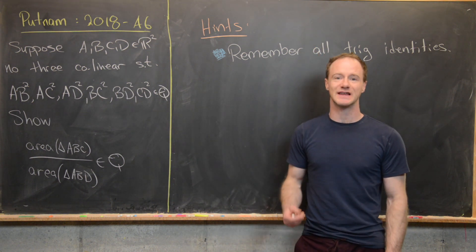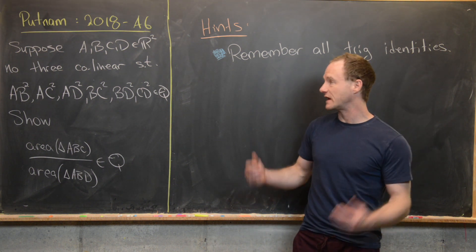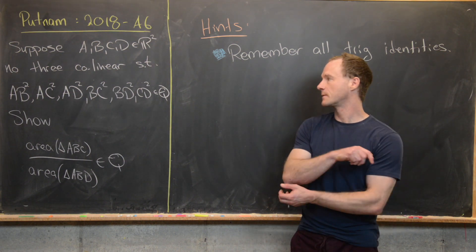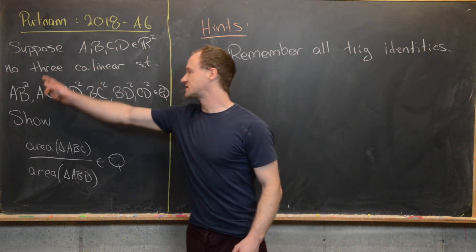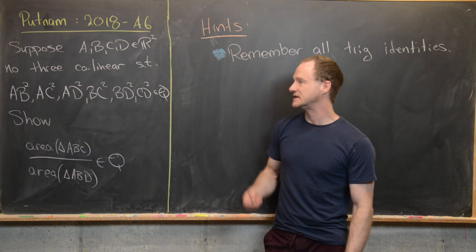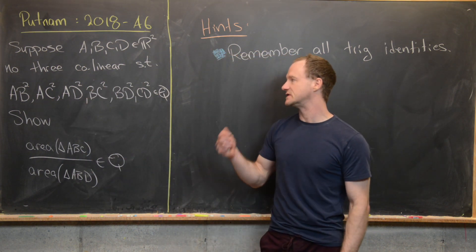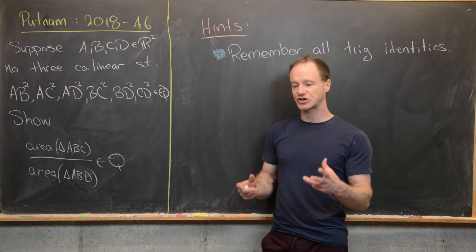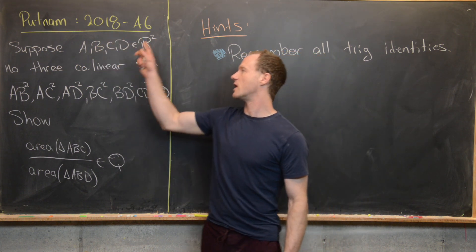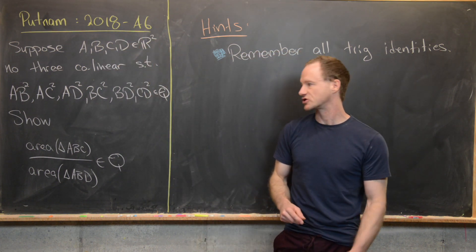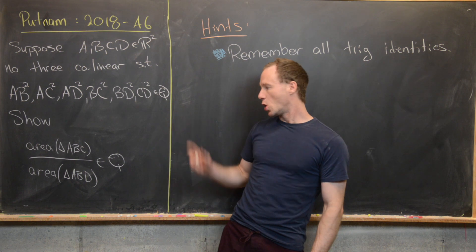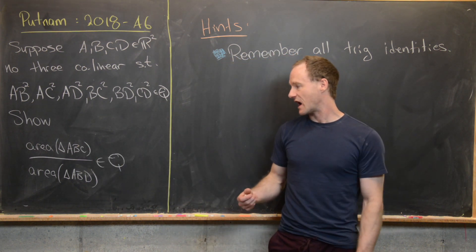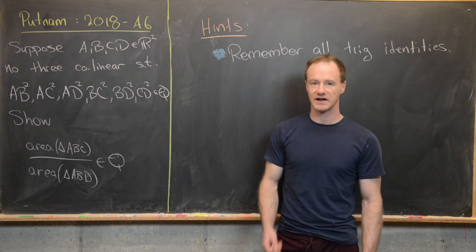We want to suppose that A, B, C, and D are in the Euclidean plane, and no three of them are collinear. We have this rule: AB squared, AC squared, AD squared, BC squared, BD squared, CD squared are all rational numbers. In other words, the square of any line segment you can make out of these four points is a rational number. Then our goal is to show that the area of triangle ABC divided by the area of triangle ABD is also a rational number.